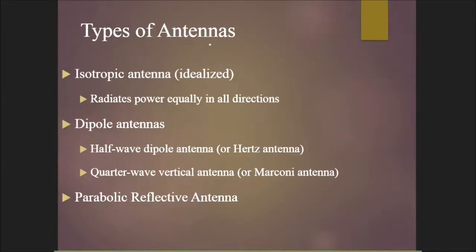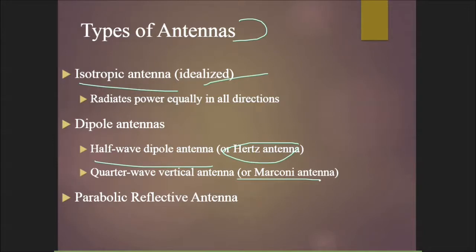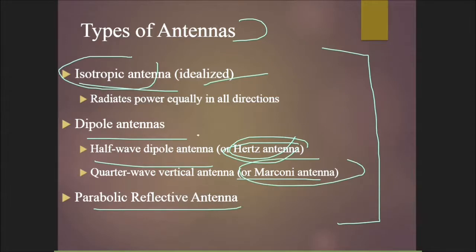There are various types of antennas. The isotropic antenna is idealized — it radiates power equally in all directions, meaning 360 degrees, omnidirectional. Then we have dipole antennas: the half-wave dipole antenna, also called the Hertz antenna, and the quarter-wave vertical antenna, called the Marconi antenna. We also have the parabolic reflective antenna. In practice, we use the dipole, Marconi, and parabolic reflective antennas.